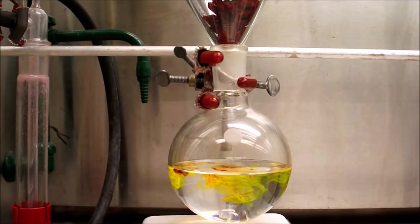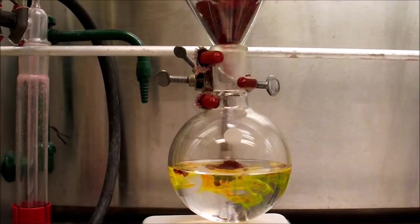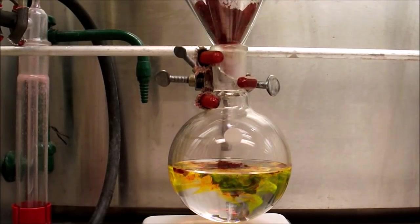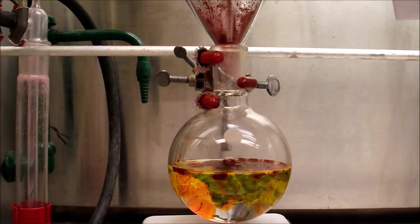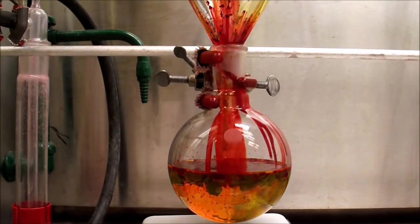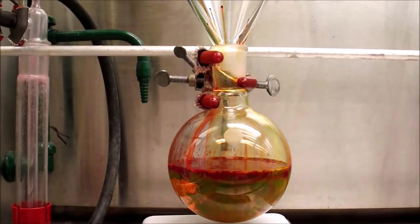To this flask is added 6.4 grams of perylene diamide. I added the PDI slowly and without stirring so that you can really see the characteristic absorption and fluorescence of perylene diamides. A small amount of dichloromethane was used to wash the funnel and sides of the round bottom flask and then the mixture was stirred.